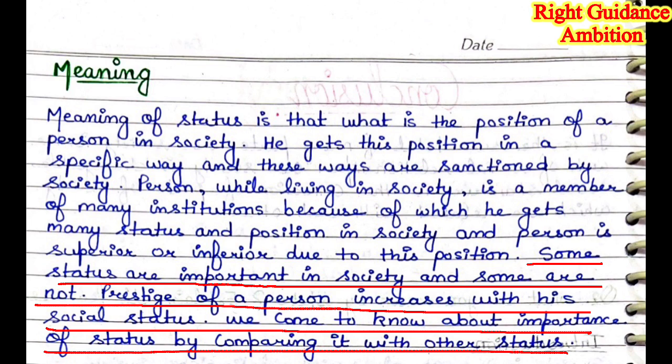How do we know which status is more important and who has more respect? When we compare statuses — for example, the status of a peon and the status of an IPS officer or IAS officer — the status of a person is evaluated through their duties, responsibilities, salaries, and functions. When we compare these, we will know which person is superior in society and which person is inferior in society.